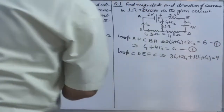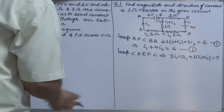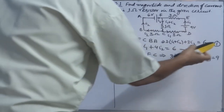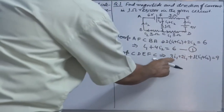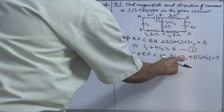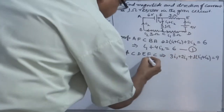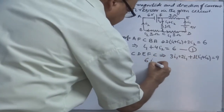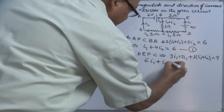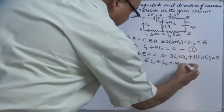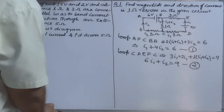This is algebraic equation 1, already written. After solving: 3I1 + 2I1 = 5I1, plus 6I1 — that is, 6I1 + I2 = 9. This is the second equation.